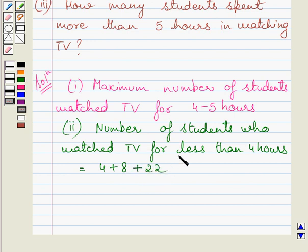This is further equal to 34. So, the number of students who watch TV for less than 4 hours is 34.